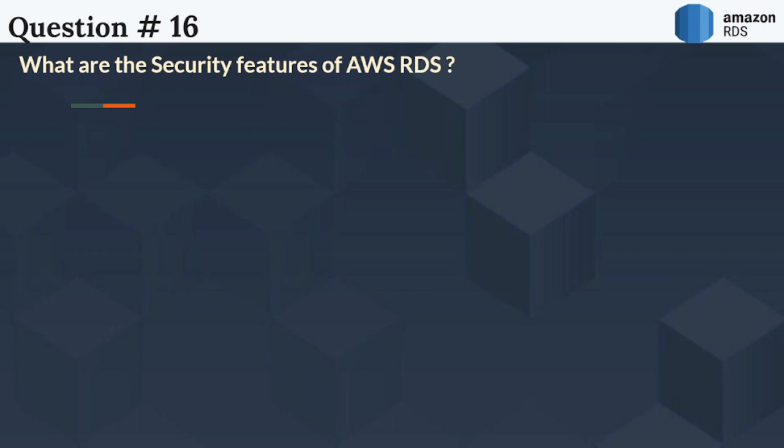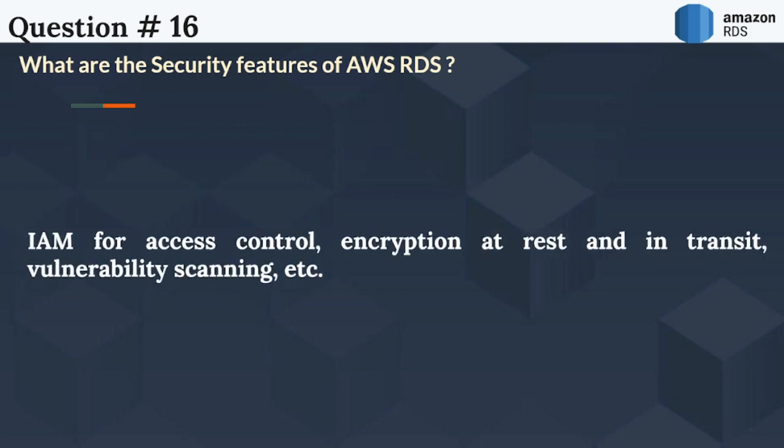The next question is: What are the security features of AWS RDS? Key security features include IAM for access control, encryption at rest and in transit, and vulnerability scanning.